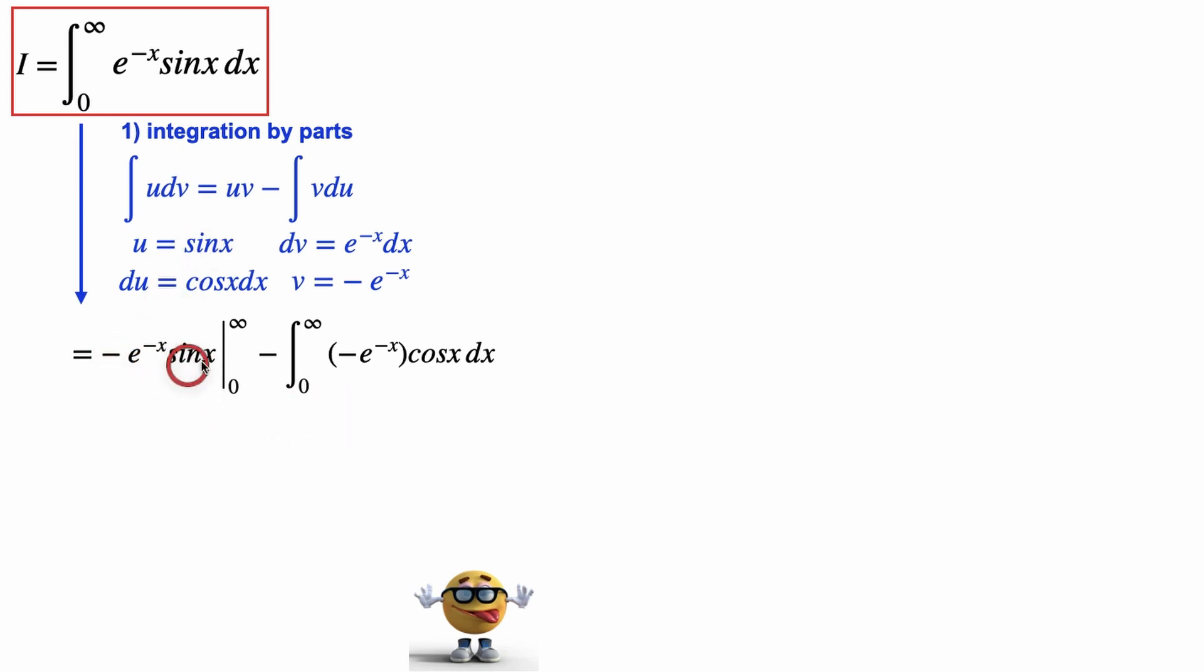This is our u times v from zero to infinity. Now let's look at this first term. We're going from zero to infinity, and this is the limit as x goes to infinity. Well this first part goes to zero, and the second part, sine of zero, is zero. So this whole term is zero.